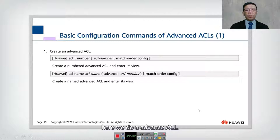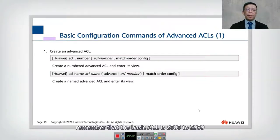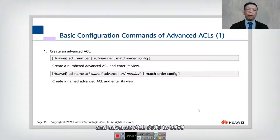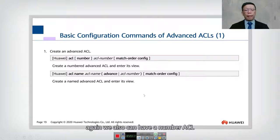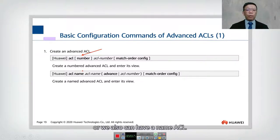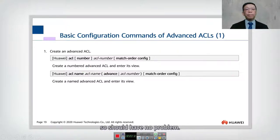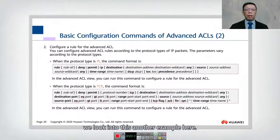Another example here — we do an advanced ACL. Remember that the basic ACL is 2000 to 2999, and the advanced ACL is 3000 to 3999. We can also have a numbered ACL or a named ACL, as explained earlier.